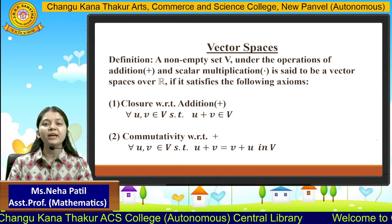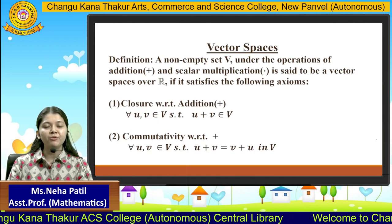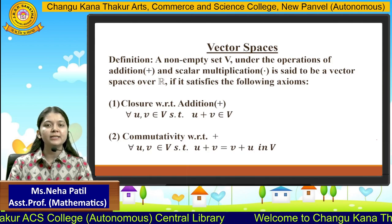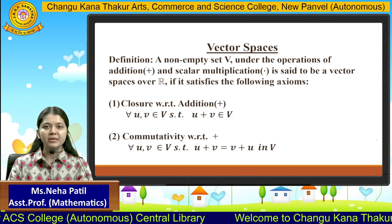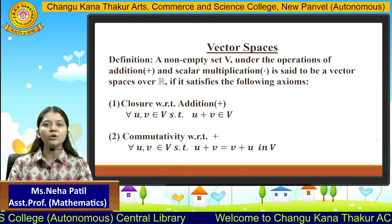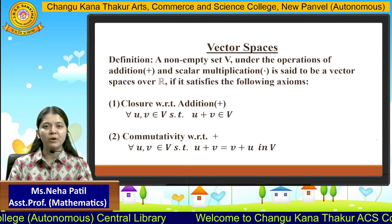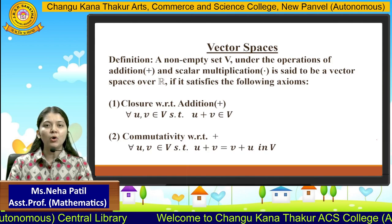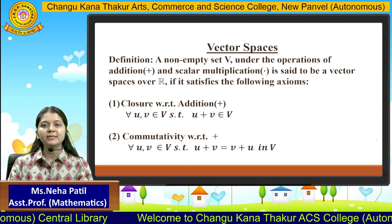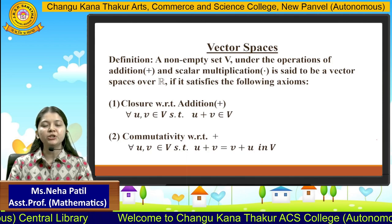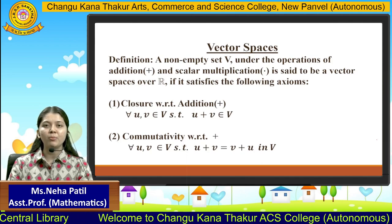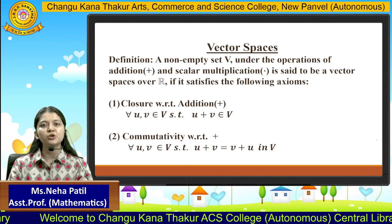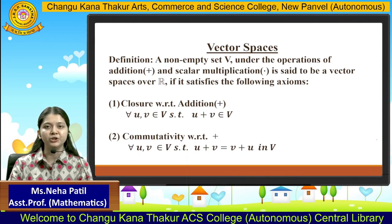If any one property fails to be satisfied, we cannot consider that set as a vector space. Now let's see all 10 properties one by one. Since there are two operations — addition and scalar multiplication — the first five properties are based on addition and the next five properties are based on scalar multiplication.